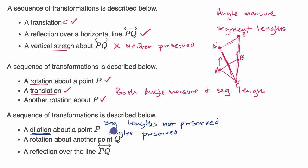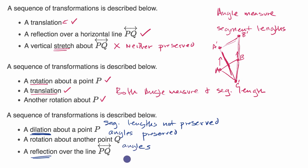So already we've lost our segment lengths, but we've still got our angles. Then we have a rotation about another point Q — a rigid transformation that would preserve both, but we've already lost our segment lengths. Angles continue to be preserved. Finally, a reflection — still a rigid transformation — would preserve both, but our segment lengths were already lost through the dilation. So after these three transformations, the only thing that's going to be preserved are the angles.